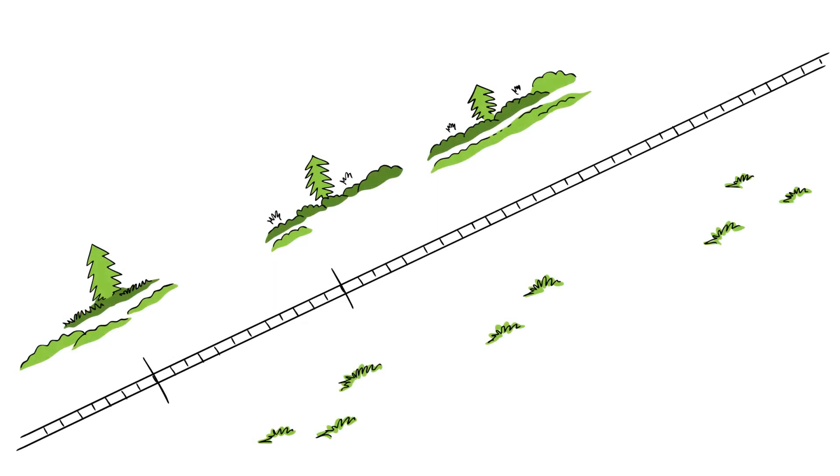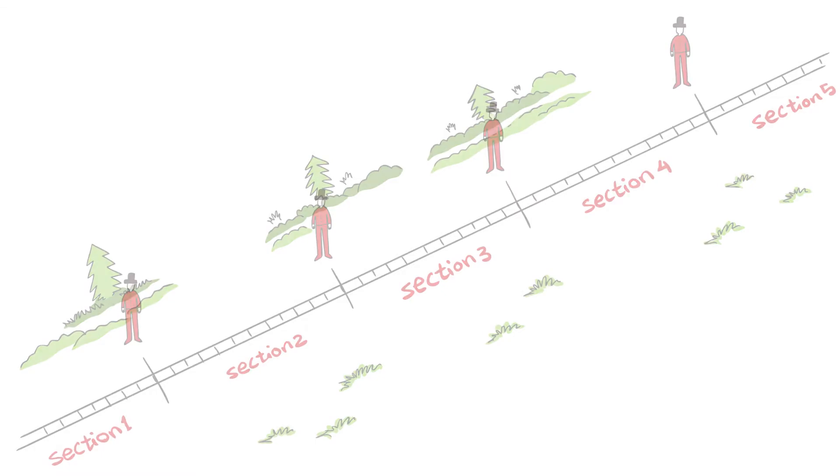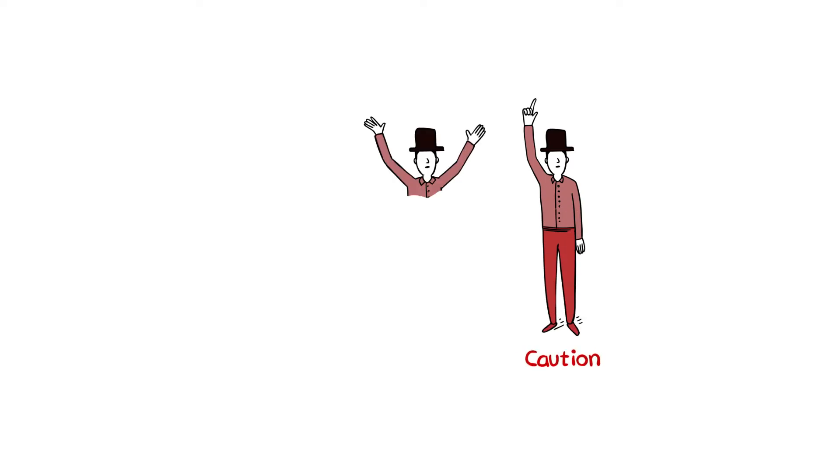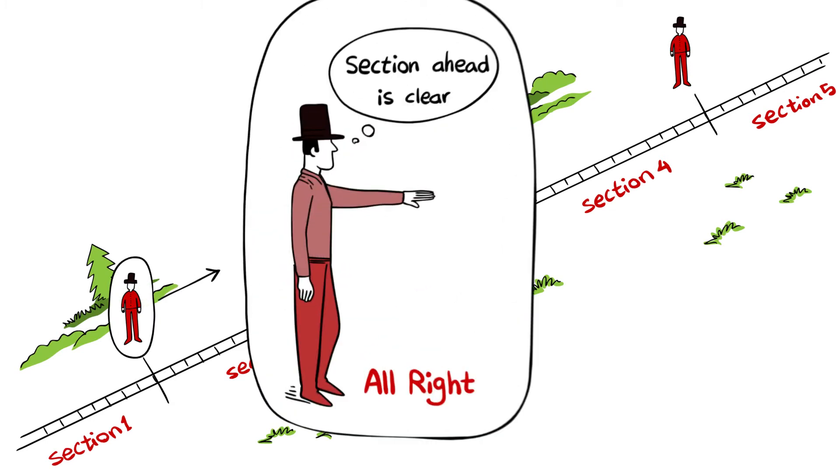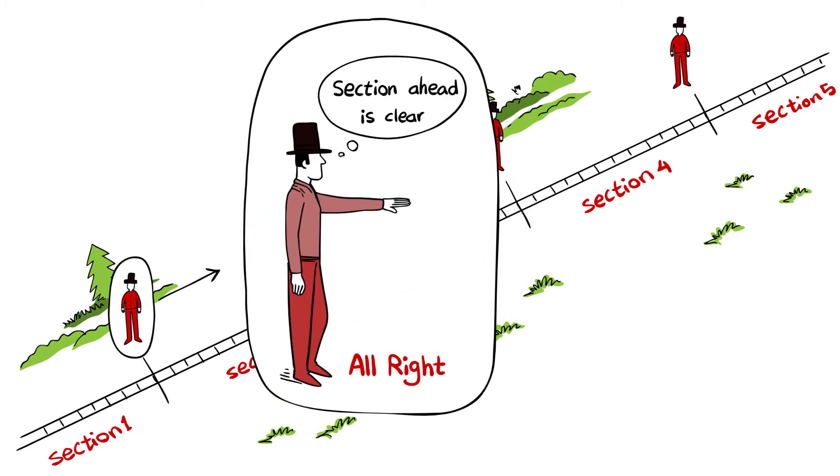The first signaling approaches were human-based. Engineers divided the track into sections several miles long and stationed railway policemen at the beginning of each section. The policeman using hand signals indicated to the train driver the status of the track section ahead.